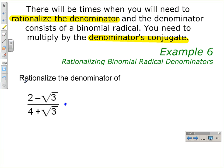So in this case, to rationalize the denominator of 2 minus the square root of 3 all over 4 plus the square root of 3, we multiply by the conjugate of 4 plus the square root of 3, which is 4 minus the square root of 3.